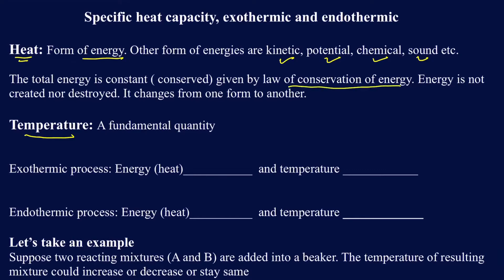What that really means is the energy is never created or destroyed. It just changes from one form to another form. So we can have kinetic energy changing to potential energy and vice versa, and we can also have chemical energy changing to heat and vice versa. It changes from one form to another, but you really don't lose it or gain it.